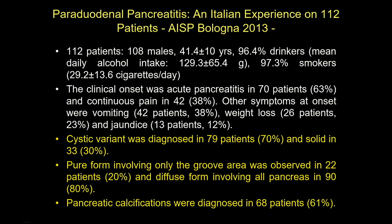The cystic variant accounts for about 70% and the solid variant for 30%. There can be pure forms — only in the groove — or a diffuse form in most patients.